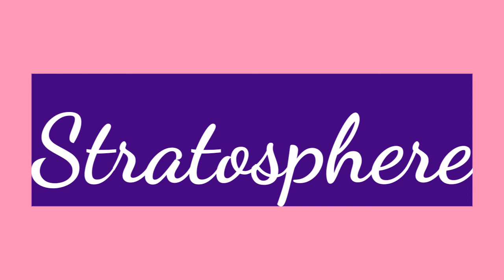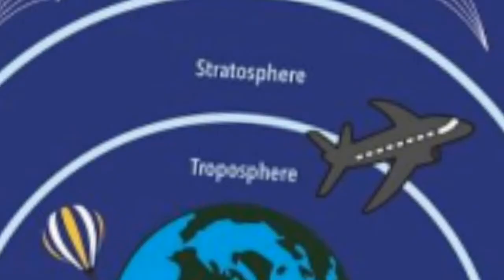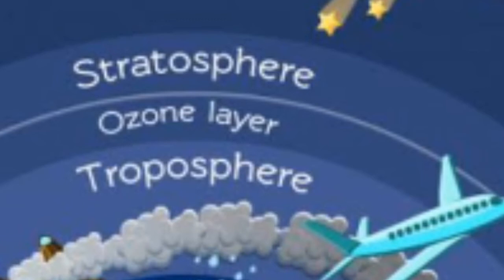Above the troposphere, stratosphere is present. Jaise hi troposphere ka layer khatam hota hai, voha se start hota hai stratosphere. Jet planes fly in this layer — humara fighter planes, air force wale — stratosphere mein fly karte hai. Because the clouds are rare here, aapko baadal kabhi kabhi hi dikhenge.